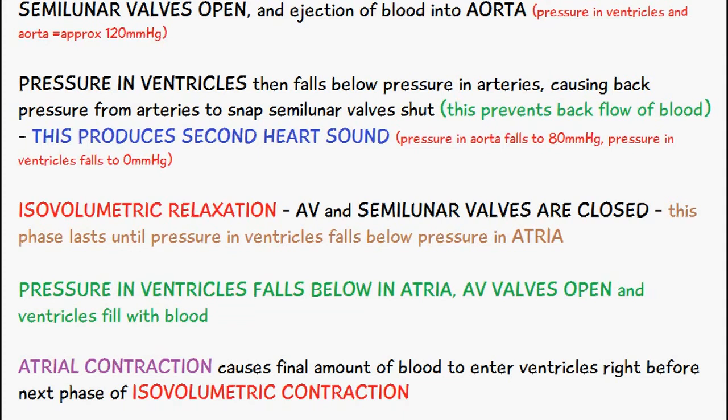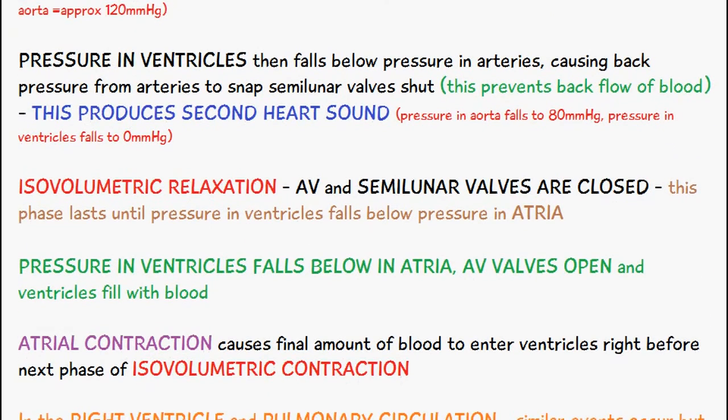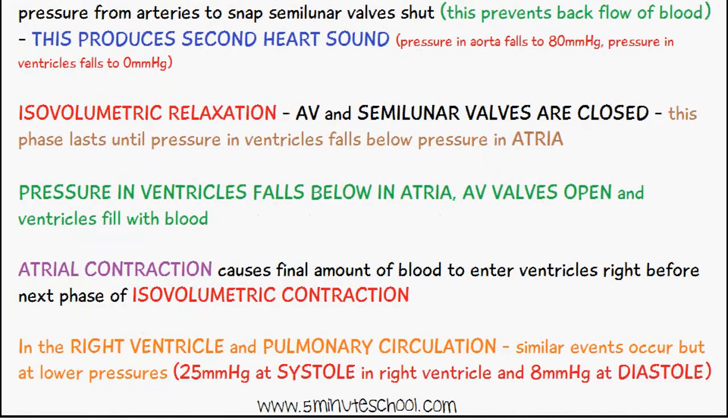Atrial contraction delivers the remaining 20% of blood to enter the ventricles right before the next phase of isovolumetric contraction, and then the cycle will repeat itself again.